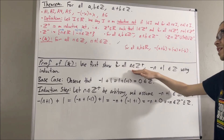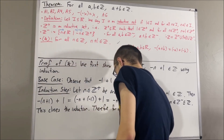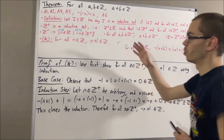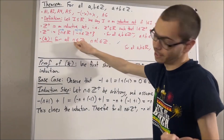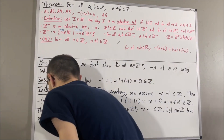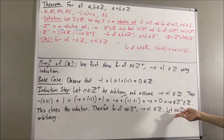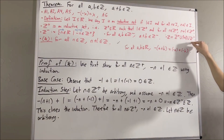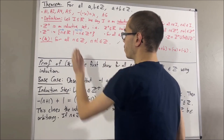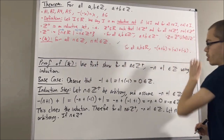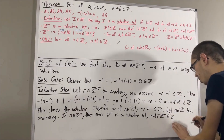By induction, we have shown for all positive integers n, negative n plus 1 is an integer. Now we're going to show that star is true. Since we're trying to prove a statement about all integers, let's give ourselves an arbitrary integer n. The goal is to show that n plus 1 is an integer, and to show that, we're going to split this up into three cases: either n is a positive integer, n is equal to 0, or n is a negative integer. If n is a positive integer, since the positive integers is an inductive set, it follows that n plus 1 is a positive integer, which is a subset of the integers, so n plus 1 is an integer.